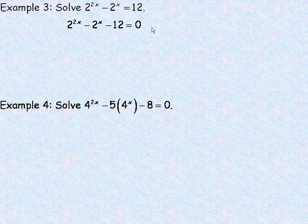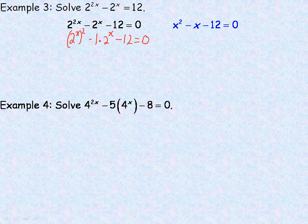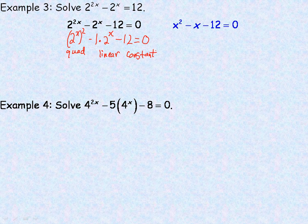So we're actually going to factor this. Factoring this is extremely similar to factoring x squared minus x minus 12. To show you: 2 to the 2x can be written as 2 to the x squared, minus 1 times 2 to the x, and then minus 12. So this is the quadratic type term even though it has an exponential part, this is the linear term, and minus 12 is the constant — which are the characteristics of a quadratic equation.